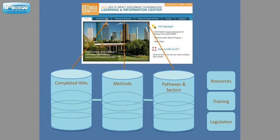Under the Completed HIAs tab, you'll find the archive or database of HIAs. Each HIA in the archive has a summary page where you'll find links to more information on the methods used in the HIA, the pathways examined, and the relevant sector the policy falls in. You can also navigate to the HIA methods and pathway and sector review pages by directly going to the tabs from the menu bar.